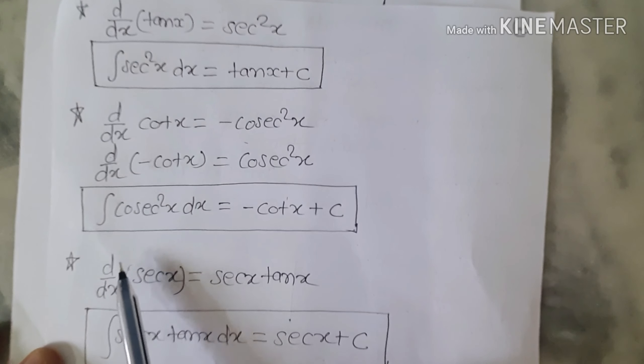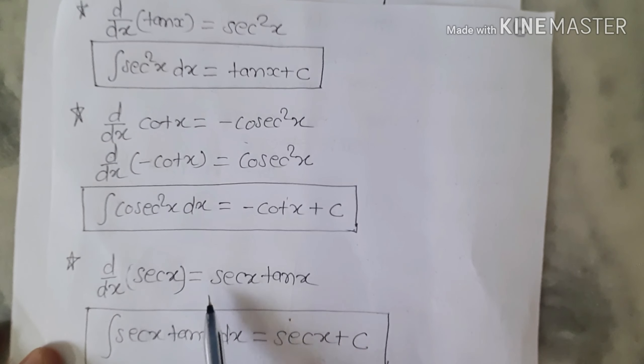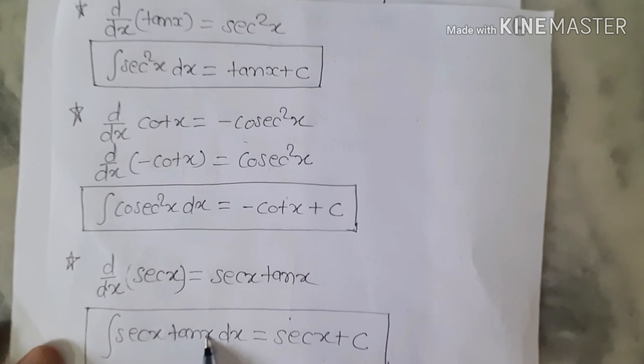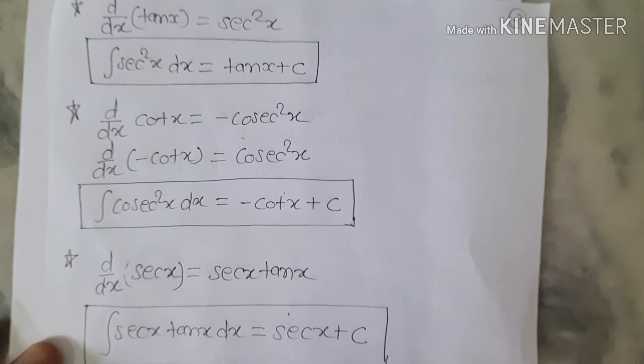Next, d/dx of sec x equals sec x · tan x. So the integral of sec x · tan x equals sec x plus c.